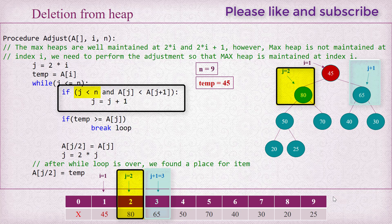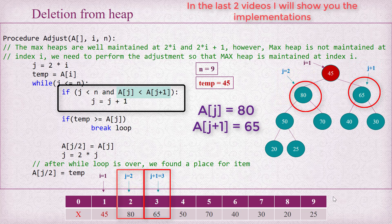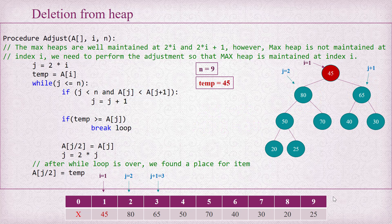Since the sibling exists, we compare the content of j with that of its sibling at j+1, that is 80 and 65. 80 is larger than 65, so the condition a[j] < a[j+1] fails because 80 < 65 is false, and we keep j at index 2. So index j will remain at the larger of the two siblings. Now we compare the content of index j — a[j] which is 80 — with temp, that is 45. Is temp greater than or equal to a[j]? No, it's not. Had it been true, we would break the loop, as that would mean the heap is maintained at index i.